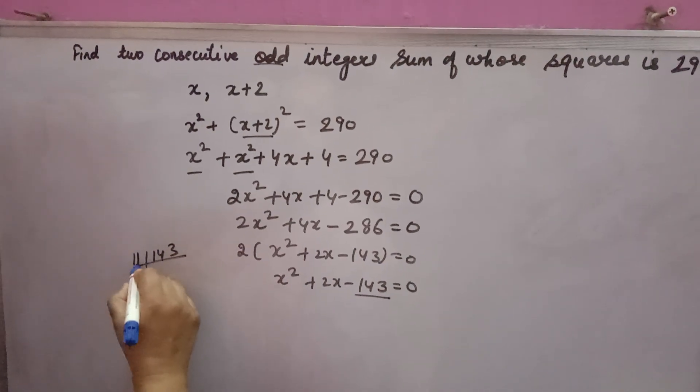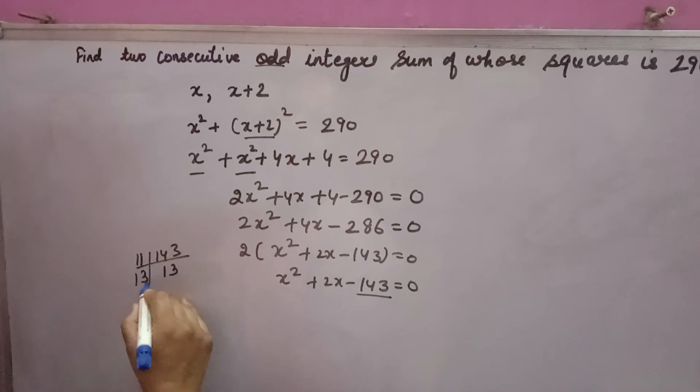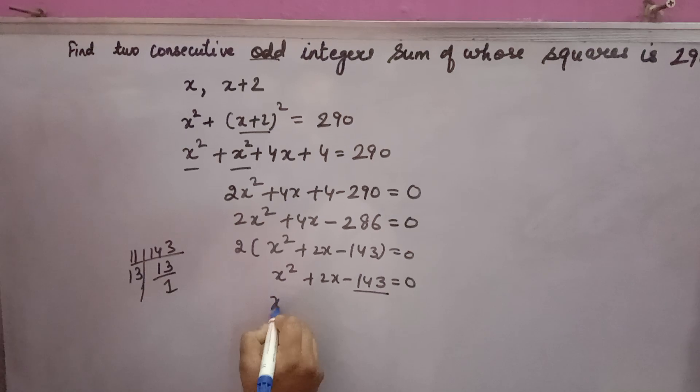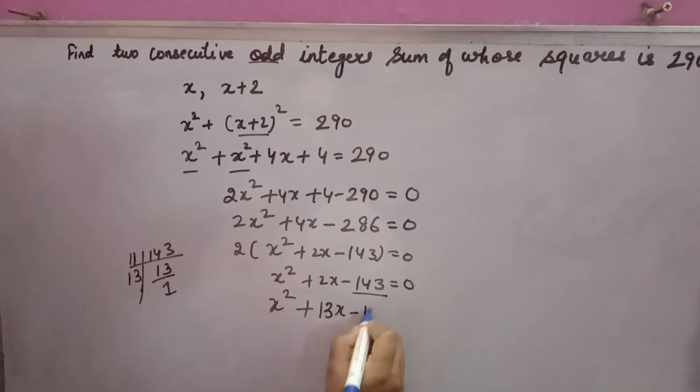11 and 13 are factors, so you can write 2x as 13x minus 11x, giving x squared plus 13x minus 11x minus 143 equals 0.